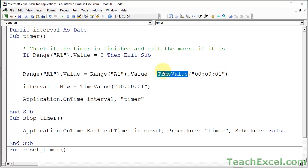Time value function says convert this into a time that Excel can use as a time. Since this cell has a time in it, it just very simply removes one second from this cell.